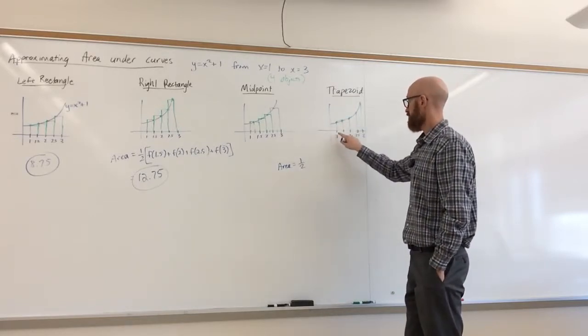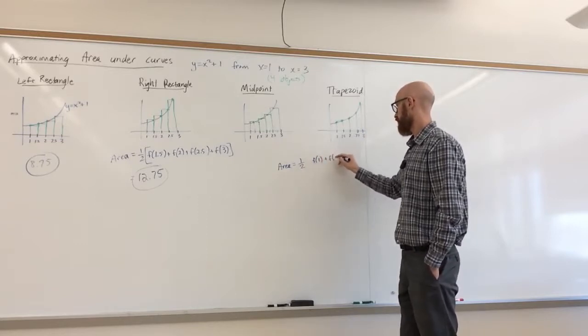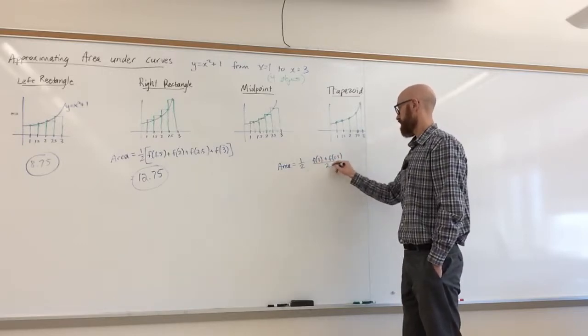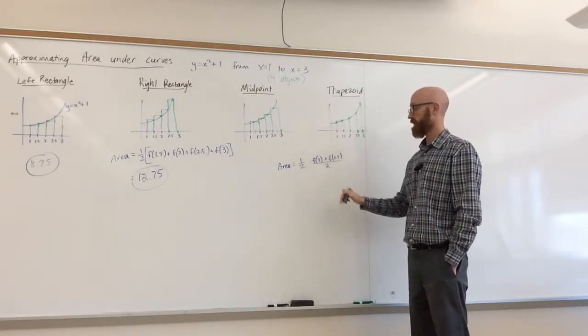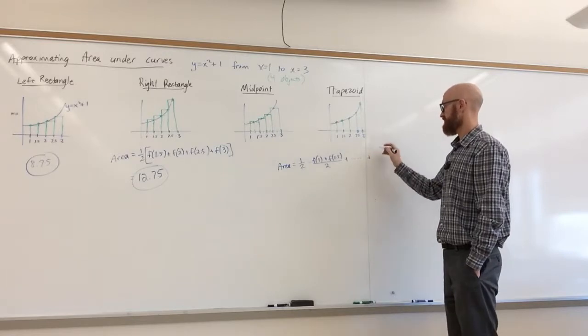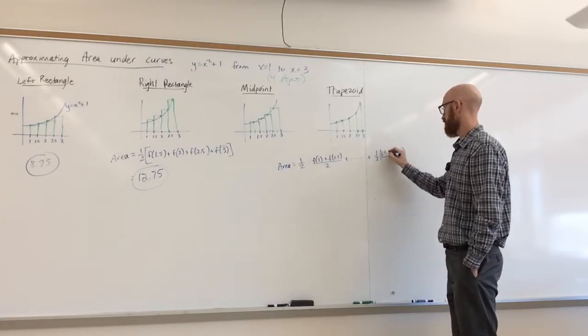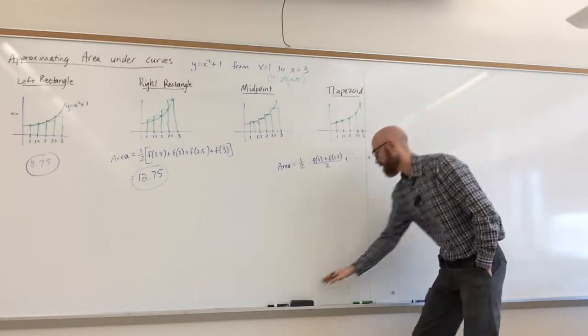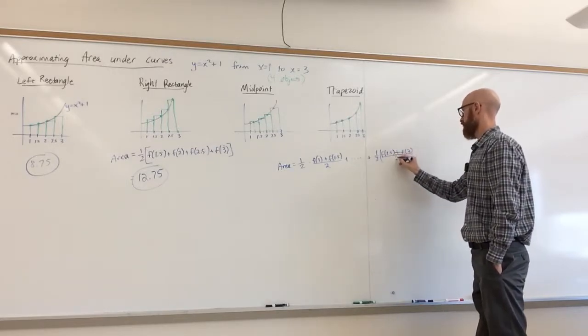So we need to average the height of one and one and a half. So we take f of one and f of 1.5. And so this average here will give you an average height of that trapezoid and we multiply it by its base size. And we can repeat this. I'll just do the last one as well, which is one half f of 2.5 plus f of 3. I'm just going to write that a little bigger. Over 2.